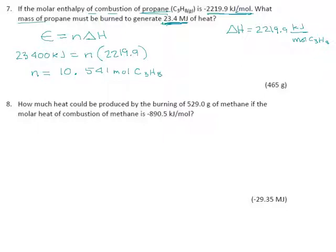They want the mass of propane, so we need a molar mass. Mass equals the number of moles times the molar mass. For propane, C3H8, that would be 3 times 12.01 plus 8 times 1.01, giving 44.11 grams per mole. So 10.541 times 44.11 gives 464.96 grams. Because of our megajoules up here — three significant digits — we have to trim this down to 465 grams.